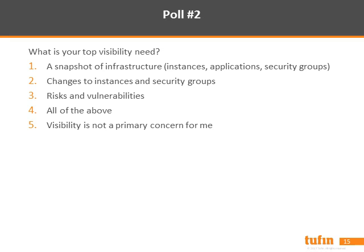Risks, vulnerabilities, and changes can be very important for control of security and compliance. So far, we don't have a single response that visibility is not a primary concern, which is definitely good feedback for us. We see the majority of answers indicating that all of the above are needed for visibility: the snapshot of the infrastructure, changes to instances and security groups, and also risks and vulnerabilities. That makes sense and resonates well with data we've explained so far as well as feedback from many of our customers.